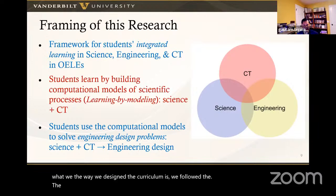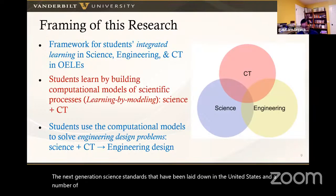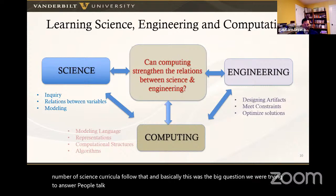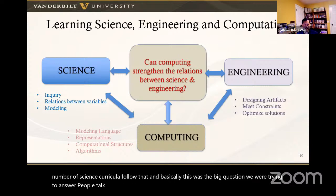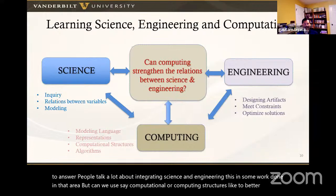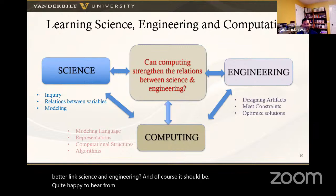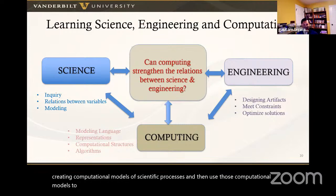We designed the curriculum following the Next Generation Science Standards (NGSS) used in the United States. The big question we were trying to answer was: can we use computational or computing structures to better link science and engineering? The answer is yes — by creating computational models of scientific processes and then using those models to solve an engineering design problem. For NGSS standards, engineering problem solving in middle schools involves concepts like defining and delimiting problems, designing and refining optimal solutions, conducting fair tests, and comparing solutions.